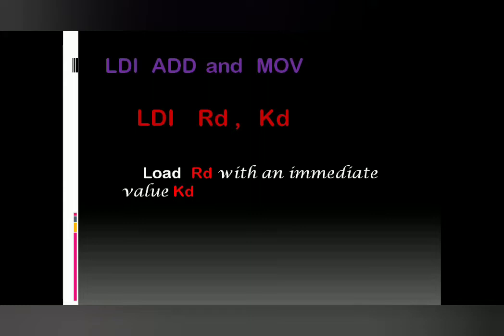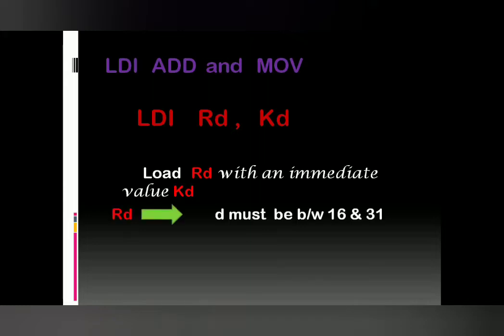It is very important to understand: the LDI load immediate instruction is used with registers Rd ranging from R16 to R31. If you try to use registers R0 to R15, you cannot use the LDI instruction. We will only use the LDI instruction when the destination register is R16 to R31.